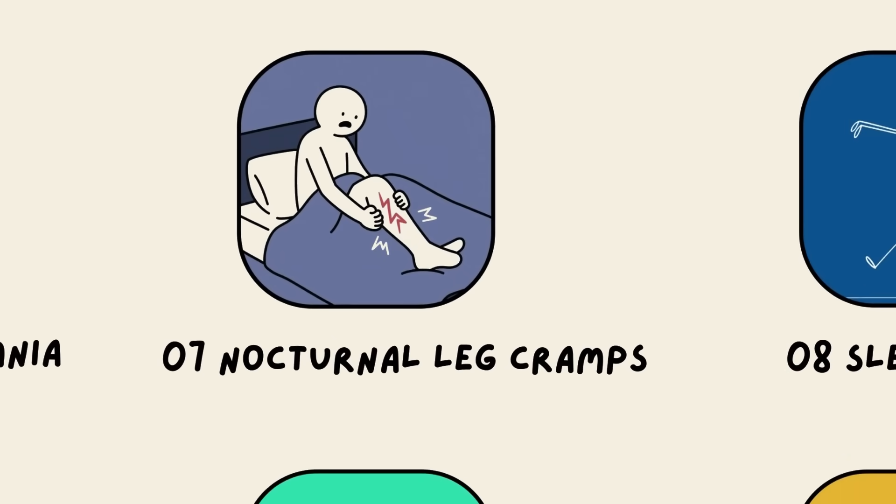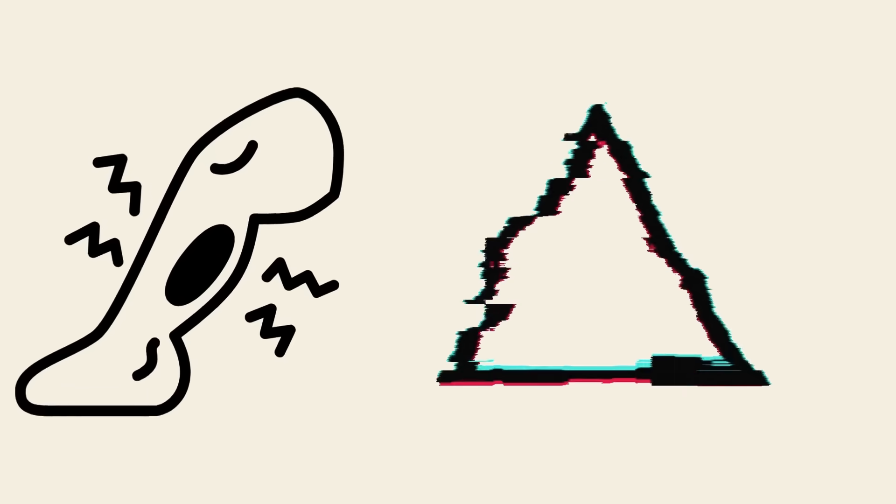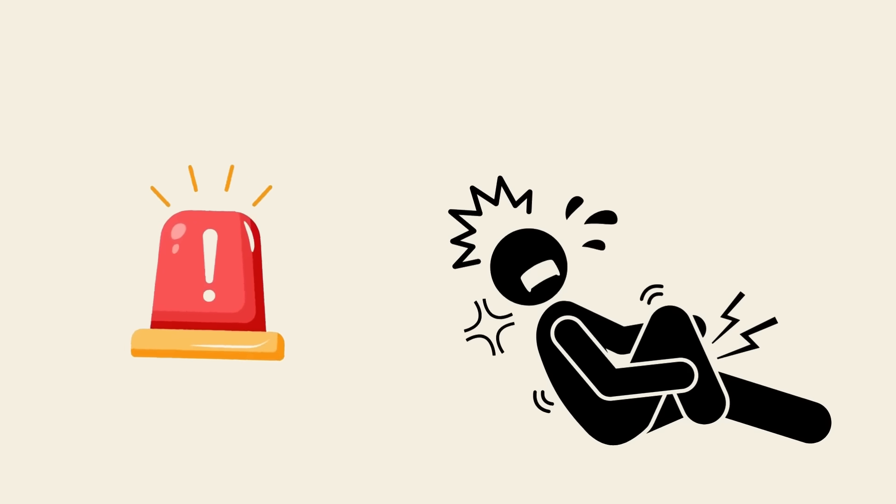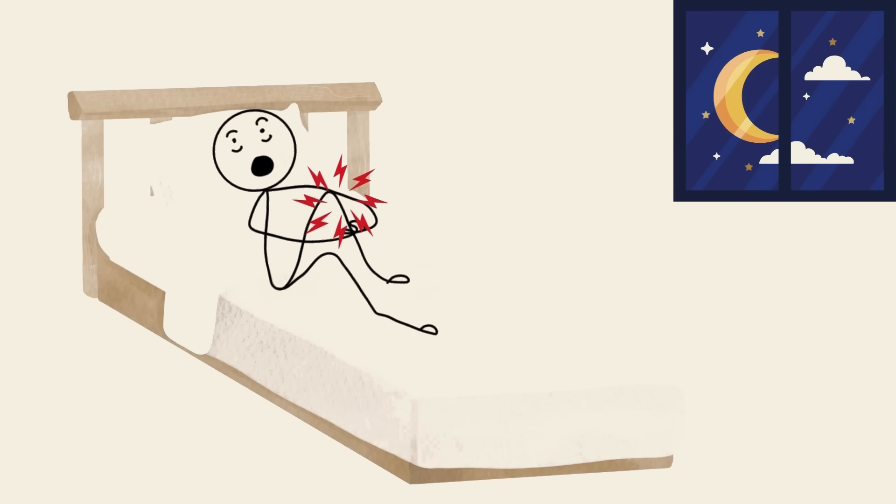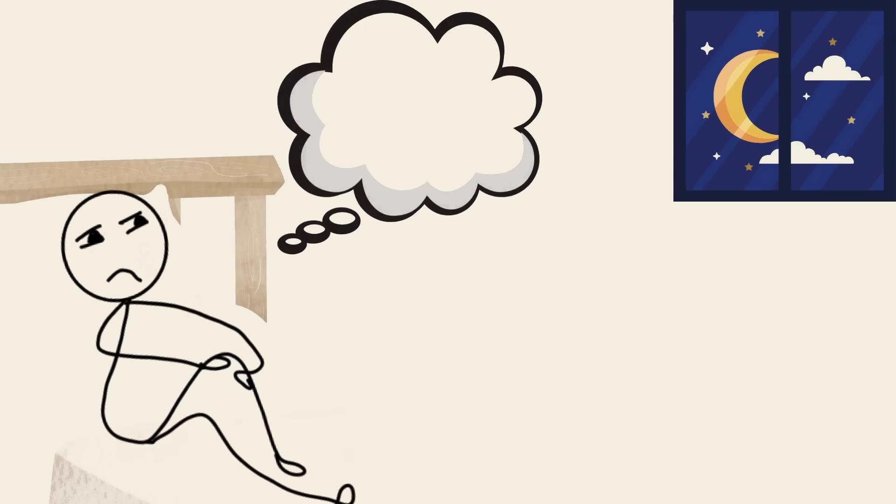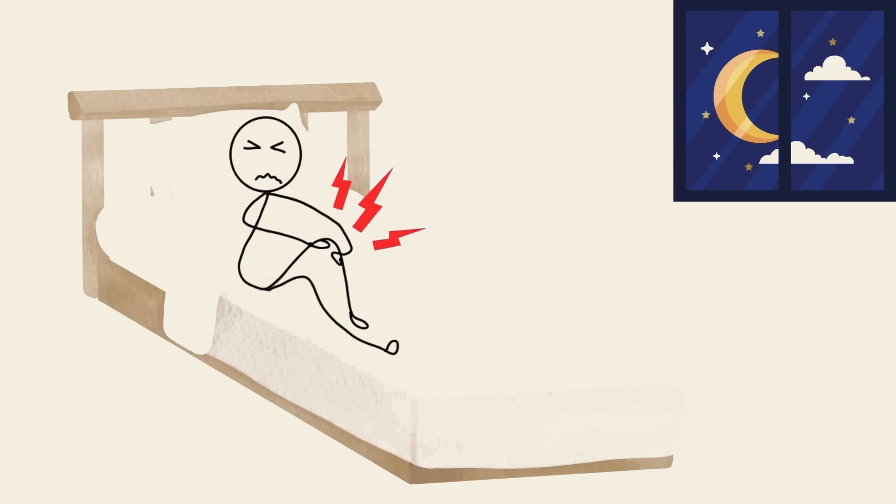Then there's the classic nocturnal leg cramps. A delightful glitch where your leg muscles seize up without warning, usually right as you're drifting off or deep into the night. You bolt upright, clutching your calf in agony, wondering if you're being punished by some ancient curse. These cramps are intense,